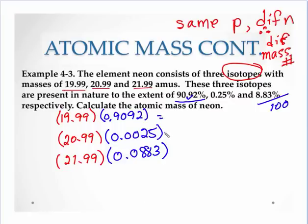So if you did that multiplication, and then if we added those up, we would get the number that would be put on the periodic table.